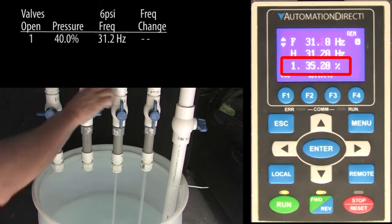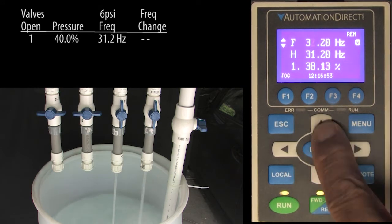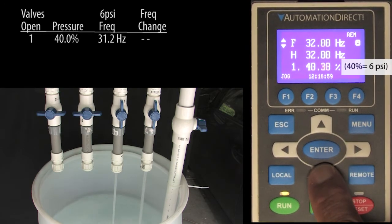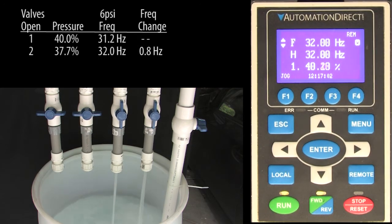If we open the second valve, we see the pressure drop to this. So we increase the drive frequency to get our 6 psi back and add that to the chart. Let's also add how much we had to change the frequency to get our pressure back.